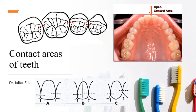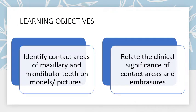Today's video is on contact areas of teeth and their clinical significance. When two adjacent teeth contact with each other, the area on the proximal side — whether mesial or distal — is known as the contact area.